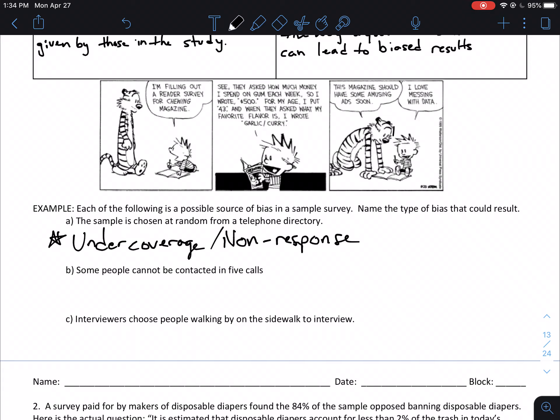So B, some people cannot be contacted in five calls. In other words, they've been contacting people. They just aren't responding. So to me, that would be non-response. I could maybe see an argument for under coverage. But I think non-response would be the better option here.